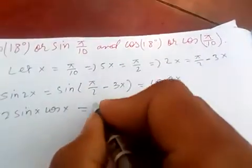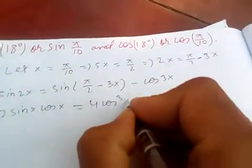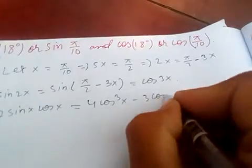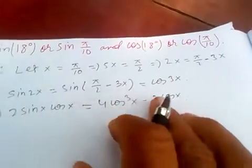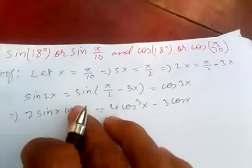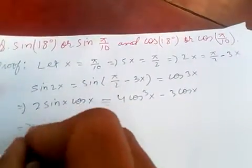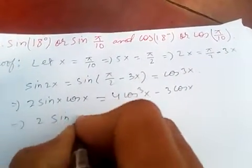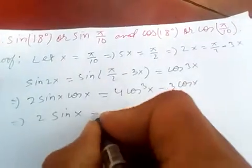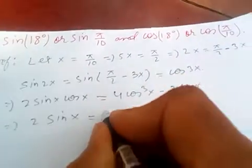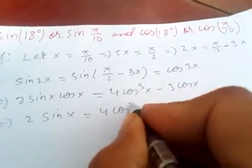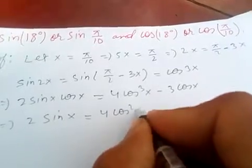Factoring out cosine x from the right side and canceling, you get 2 sine x equals 4 cosine squared x minus 3.